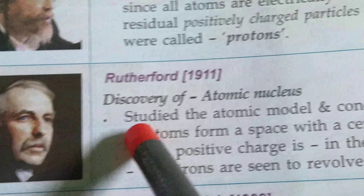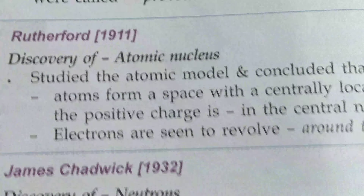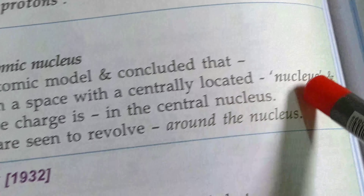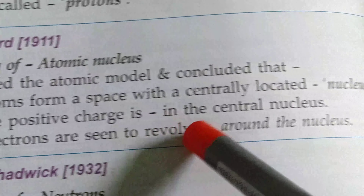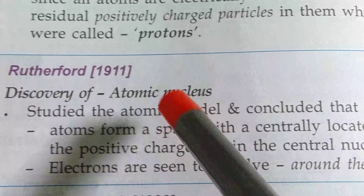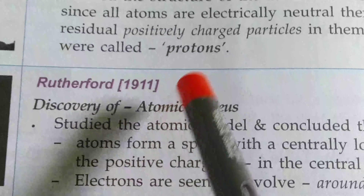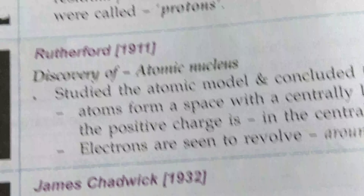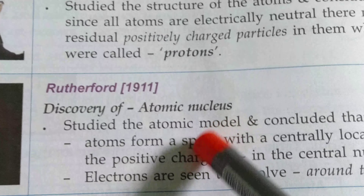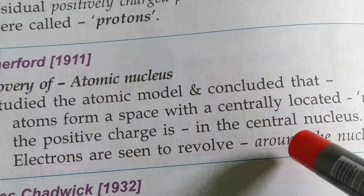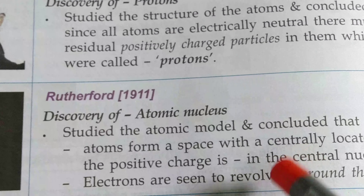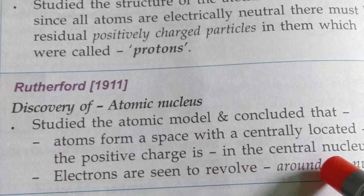Next, Rutherford — discovery of atomic nucleus. He studied the atomic model and concluded that atoms form a space with a centrally located nucleus, and the positively charged particles are in the central nucleus. Electrons are seen to revolve around the nucleus. So the atomic structure was first described by Rutherford. According to his discovery, the center of an atom consists of protons and neutrons — that is the central nucleus — and electrons revolve around it. These are negatively charged particles.